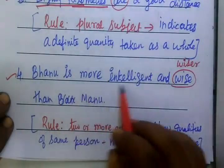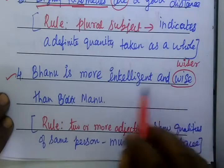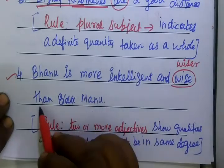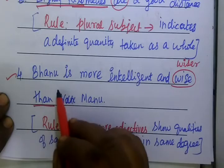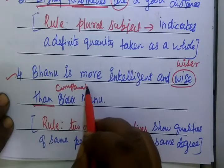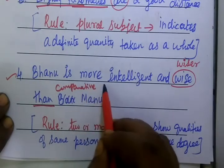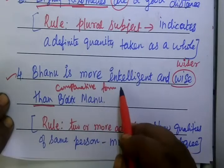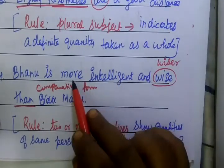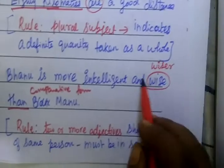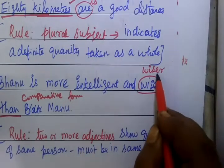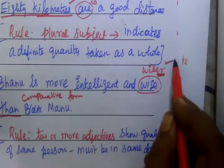Banu is more intelligent and wise than Manu. This is a comparative form. Since it is comparative form, you have to use 'wiser' instead of 'wise'. So the correct sentence is: Banu is more intelligent and wiser than Manu.